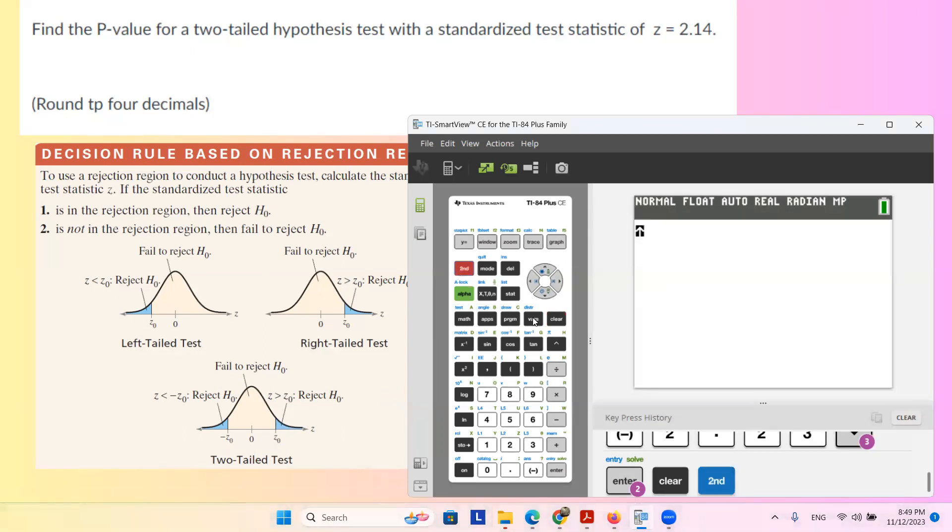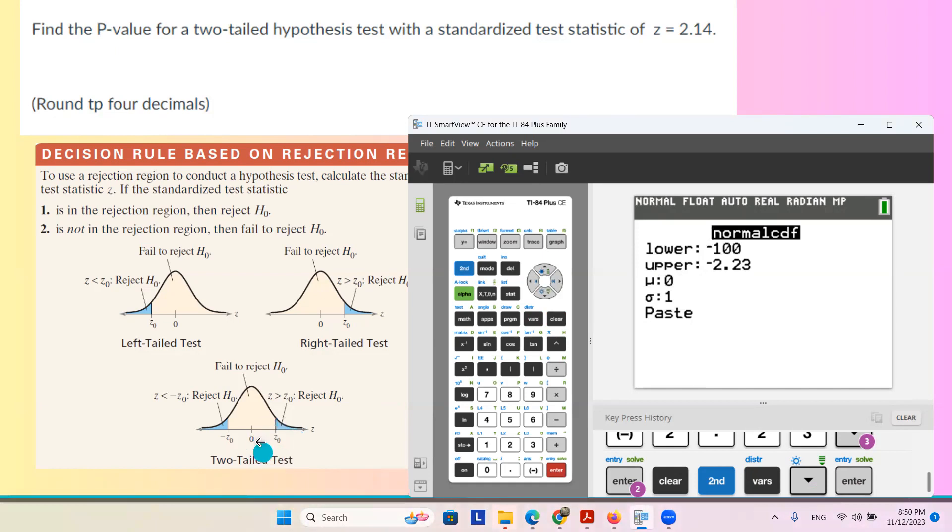Go to second, vars, and find normal cdf. The lower bound is 2.14, this number right here, 2.14.